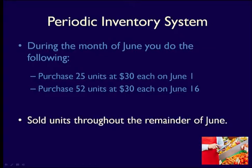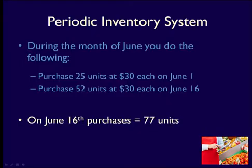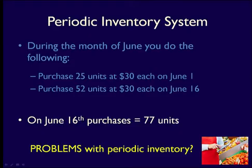Say you sell inventory throughout the whole month. What do you record when you sell the inventory? You record the sales revenue and cash increased, or accounts receivable increasing. But the purchases account will still show 77 units. Inventory sold is not removed from the purchases account.